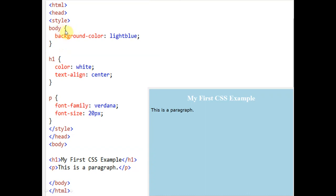After the body tag, we have the opening curly bracket, and we close with a closing curly bracket. Inside these braces, we mention the formatting. Same way, for the heading we have color white and text-align center; and for the paragraph, font family and font size. The style block starts here and closes here, followed by the closing head tag. This is the complete program.